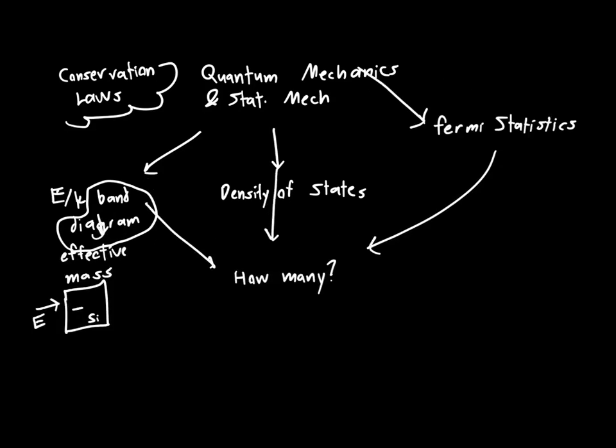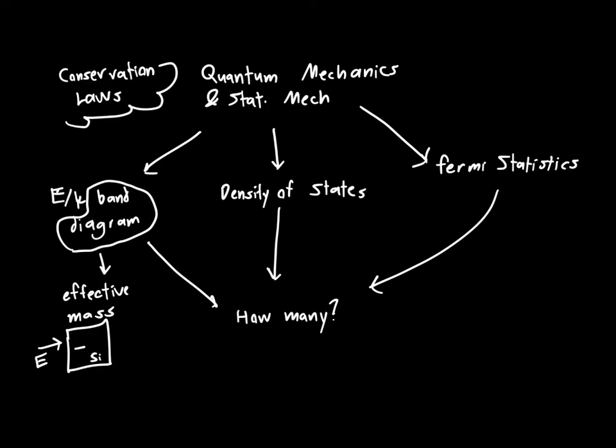And we're going to do that with an integral, basically. So we're going to integrate the density of states multiplied by our Fermi statistics over our energy band diagram. So all this is sort of brought together in order to answer our first question of how many are there?